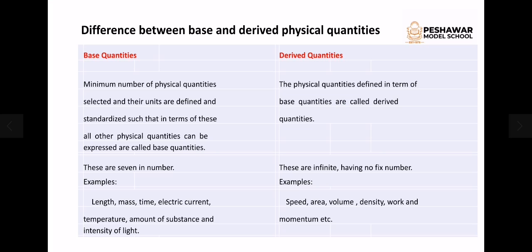The main difference between base and derived physical quantities is that base quantities are seven in number — they are the minimum number of physical quantities. Derived quantities are large in number. Base quantities cannot be standardized in terms of other quantities, while derived quantities can be standardized in terms of base quantities.